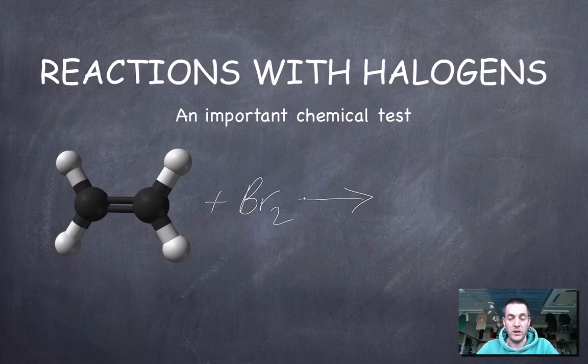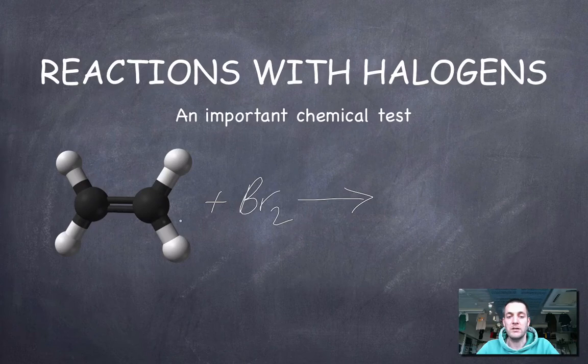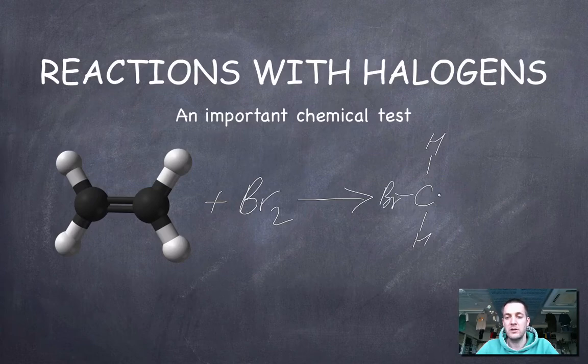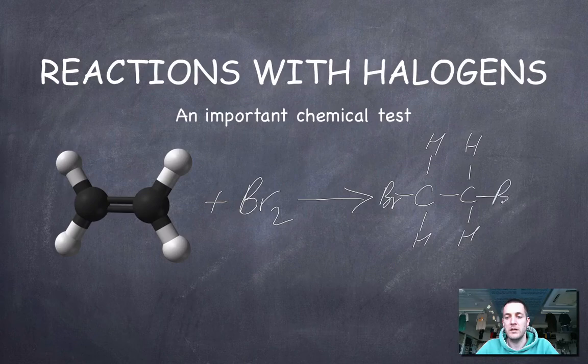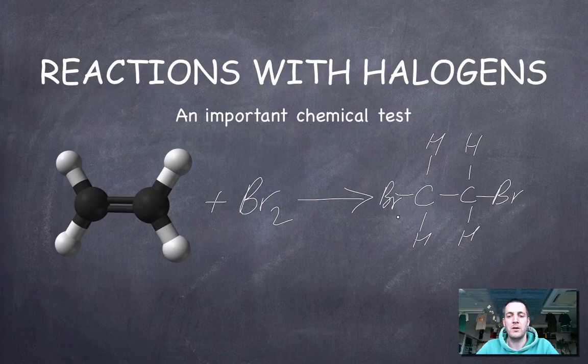And you don't need bright light for it at all because this is such a reactive molecule. So in this case, we're going to make CH2 there but with a BR attached. CH2 here but with a BR attached. So we've now made dibromoethane. But it doesn't matter what it's called for now.